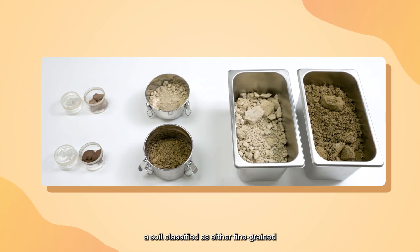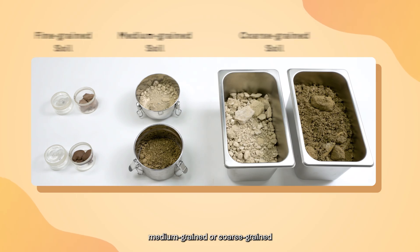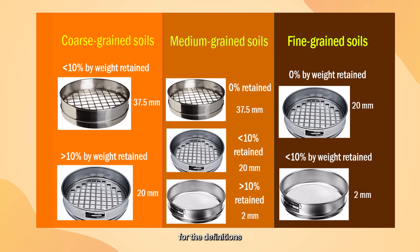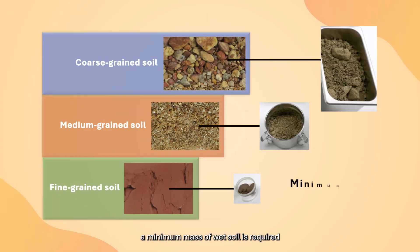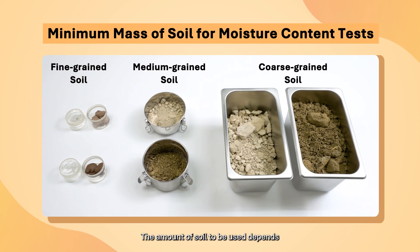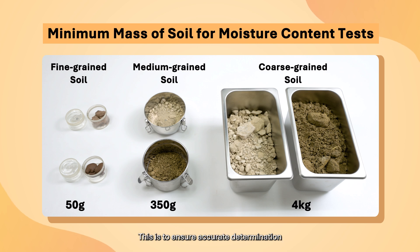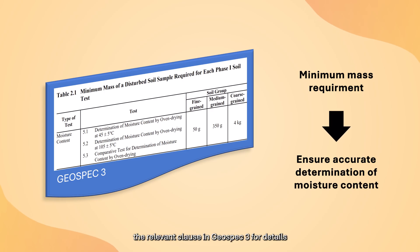In GeoSpec 3, a soil is classified as either fine-grained, medium-grained, or coarse-grained. You should refer to GeoSpec 3 for the definitions. For each type of soil, a minimum mass of wet soil is required for the laboratory moisture content test. The amount of soil to be used depends on the soil classification, to ensure accurate determination of the moisture content. You should refer to Table 2.1 and the relevant clause in GeoSpec 3 for details.